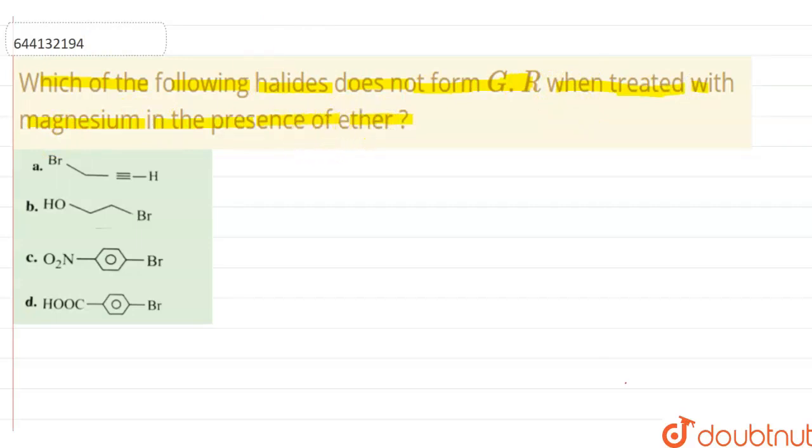Okay, so when we treat the following compounds with magnesium ether. Listen carefully: bromine here, triple bond here, hydrogen. This hydrogen behaves like H+ ion, acidic hydrogen, active hydrogen.